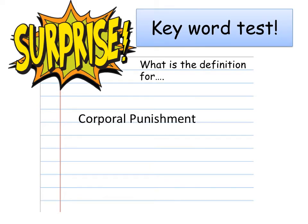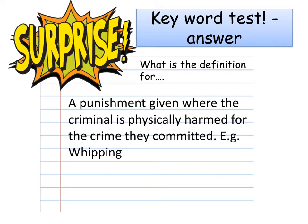Time for our first keyword test. Give me the definition of corporal punishment. Corporal punishment is punishment given where the criminal is physically harmed for the crime they have committed — for example, whipping.